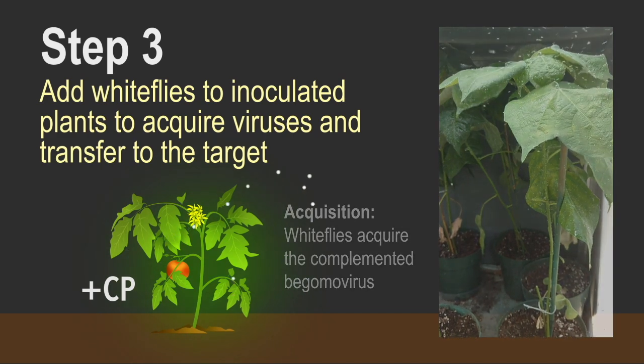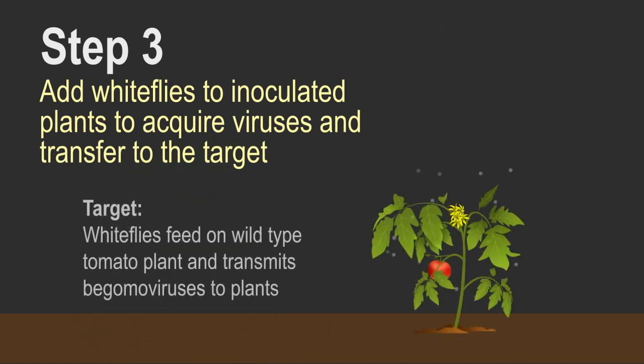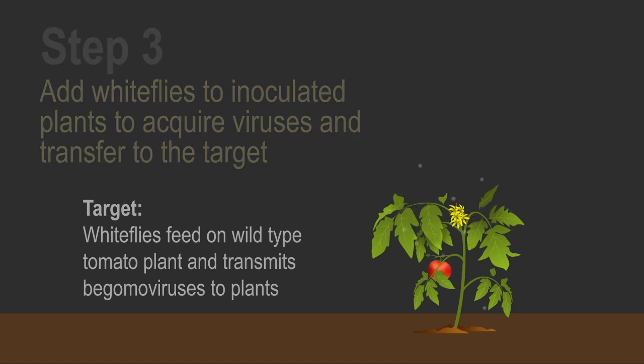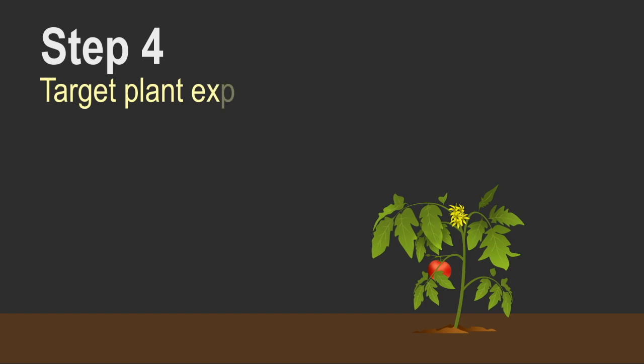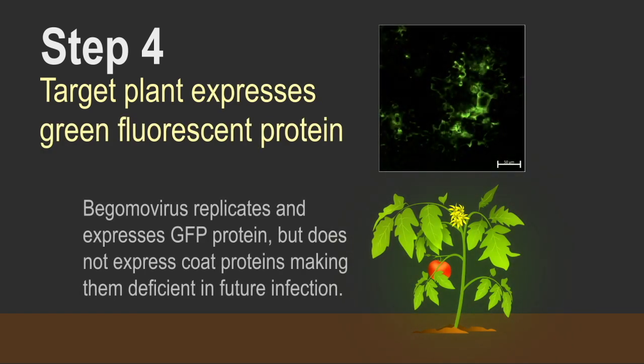The whiteflies will inoculate and take that gene from the acquisition plant. They can now deliver it to the target plant that would be in the field and deliver to that then the actual, in this case, green fluorescent protein. As you can see in that micrograph it is an actual image of the green fluorescent protein after the insects have fed on the plant.